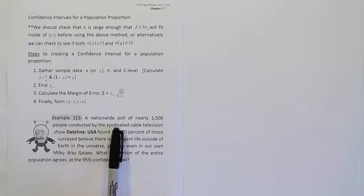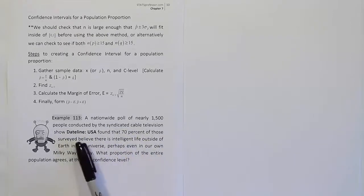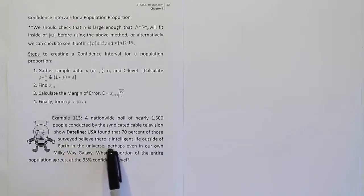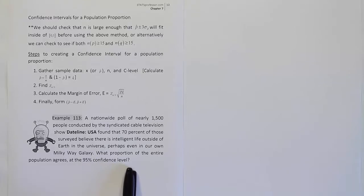Example 113. A nationwide poll of nearly 1,500 people conducted by the syndicated cable television show Dateline USA found that 70% of those surveyed believe there is intelligent life outside of Earth in the universe, perhaps even in our own Milky Way galaxy. What proportion of the entire population agrees at the 95% confidence level?